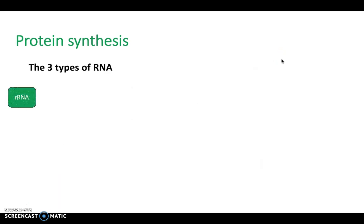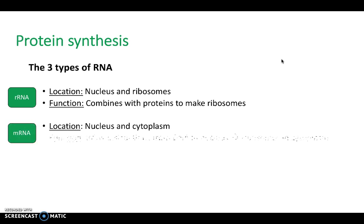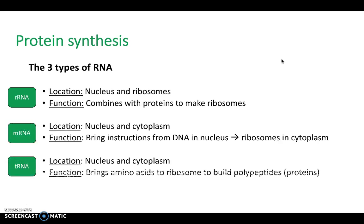There are three types of RNA: rRNA, mRNA, and tRNA. rRNA is located in the nucleus and ribosome, and its function is to combine with proteins to make ribosomes. mRNA is located in the nucleus and cytoplasm, and its function is to bring instructions from DNA in the nucleus to ribosomes in the cytoplasm. tRNA is also located in the nucleus and cytoplasm, and it brings amino acids to ribosomes to build the proteins themselves.